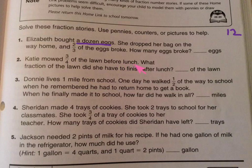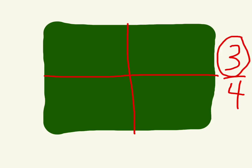The next one: Katie mowed three-fourths of the lawn before lunch. What fraction of the lawn did she have to finish after lunch? I teach in Tokyo where most people don't have lawns or mowers, but basically a lawn is a big patch of grass near someone's house. Looking from above, this might be what the lawn looks like. We need to split it into four parts, and Katie mowed three of those four parts — three-fourths. So how much of the lawn, what fraction, does she have to mow after lunch? There it is.